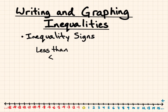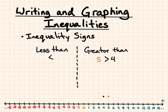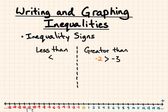Next, we'll talk about the greater than symbol. For example, 5 is greater than 4 — you can see that 5 is to the right of 4 on the number line. Another example: negative 2 is greater than negative 3. When you're looking at negatives, remember that it counts away from 0 as it decreases in value. So you can see that negative 2 is to the right of negative 3 on the number line.